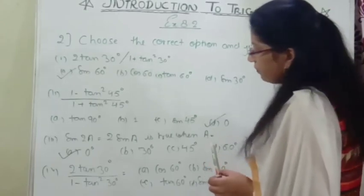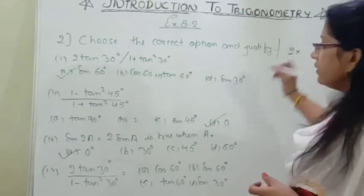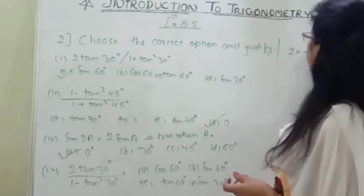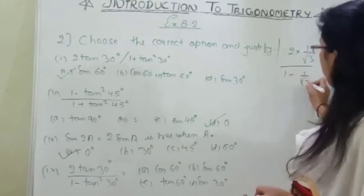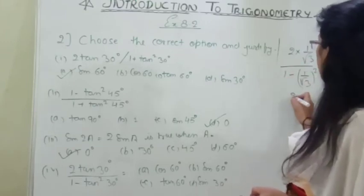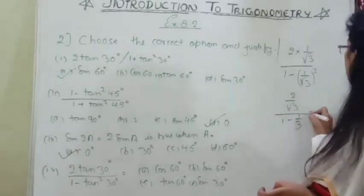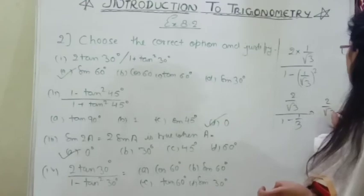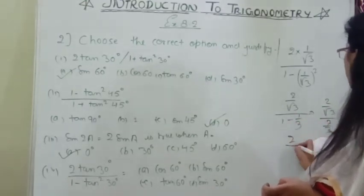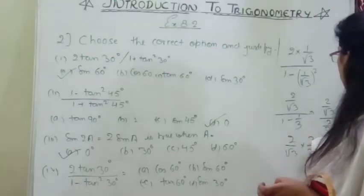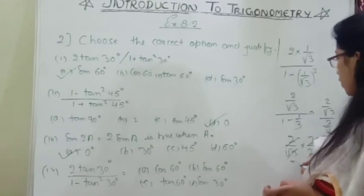The last option: 2 tan 30° divided by 1 minus tan² 30°. 2 into tan 30° = 2 × 1/√3 = 2/√3. Divided by 1 minus 1/3. So 2/√3 divided by 2/3. You will get 2/√3 into 3/2. Cancelling, we get √3.